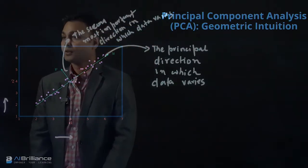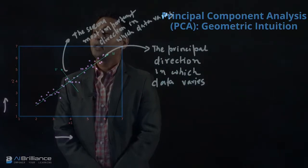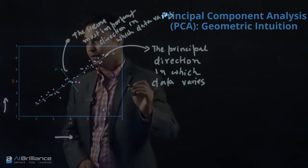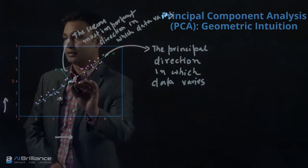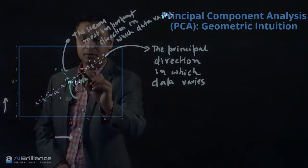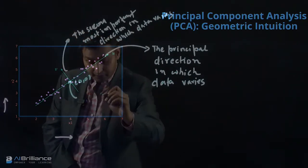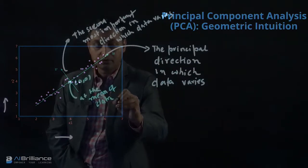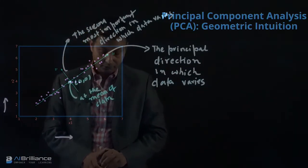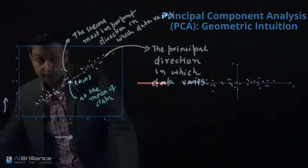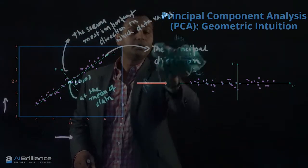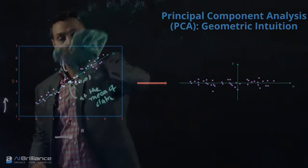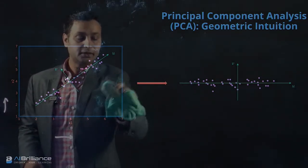What we can do is use a method that takes this information and projects the data points into a different set of axes, where the axes are located at the mean center of the data. So this origin in u and v coordinates is at zero-zero, and the location of u-v is at the mean of the data. We can project this data into this new space, taking what was in the x1 and x2 axes and projecting that dataset into the two different axes u and v.